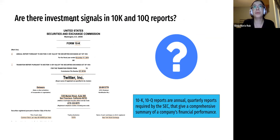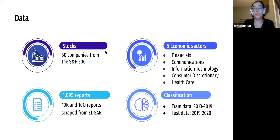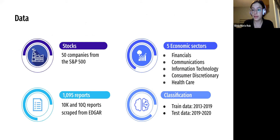Here, for example, we have a 10K report of Twitter, and I'm sure all of you know that the objective of these reports is to keep investors informed about the present financial condition and the future outlook of the company. In our case, our group was focusing on 50 companies of the S&P 500 across five sectors, and in total our dataset consisted of 1,095 reports that we scraped from the Edgar website.